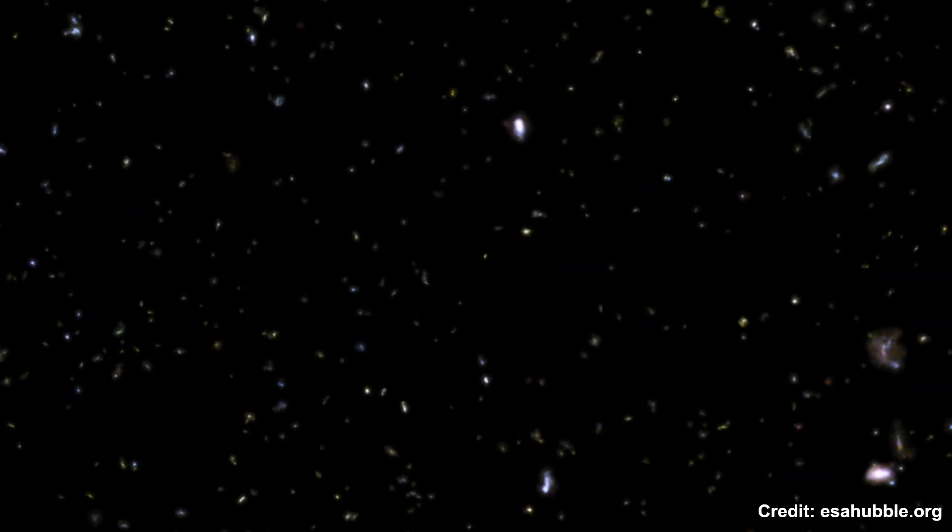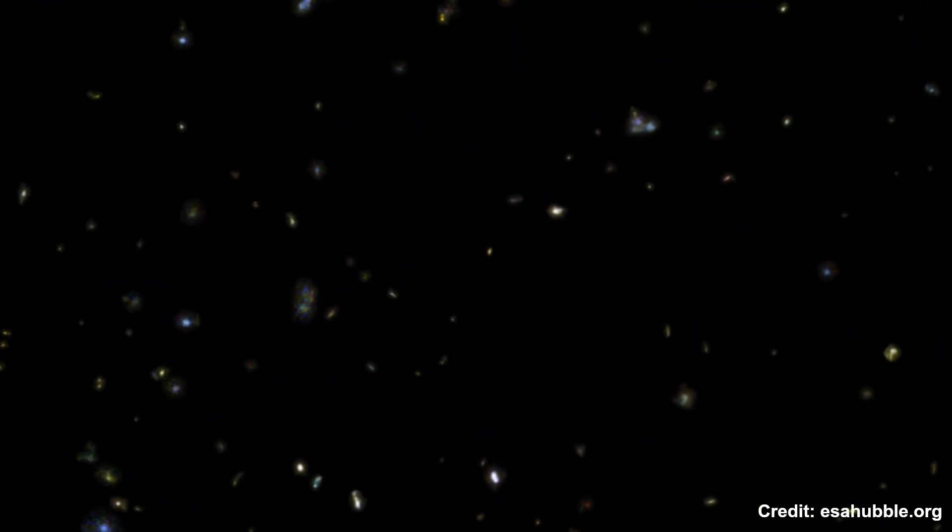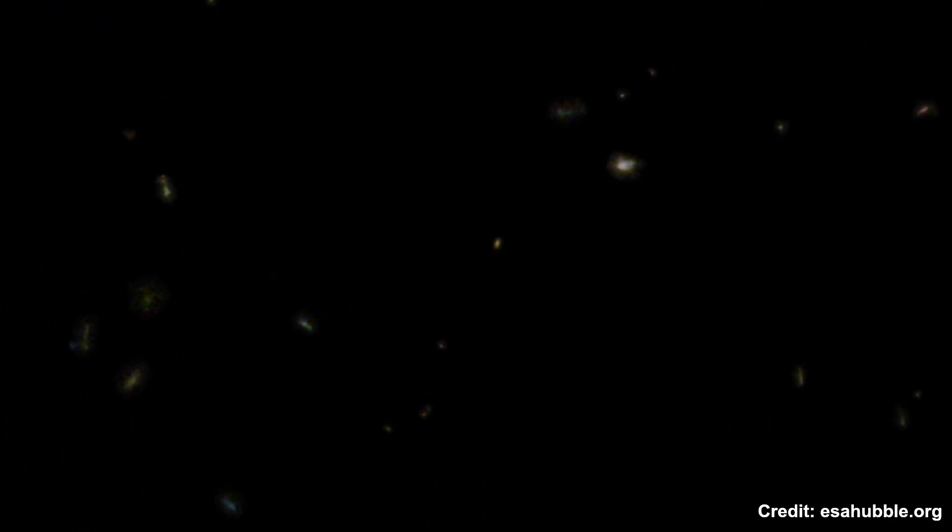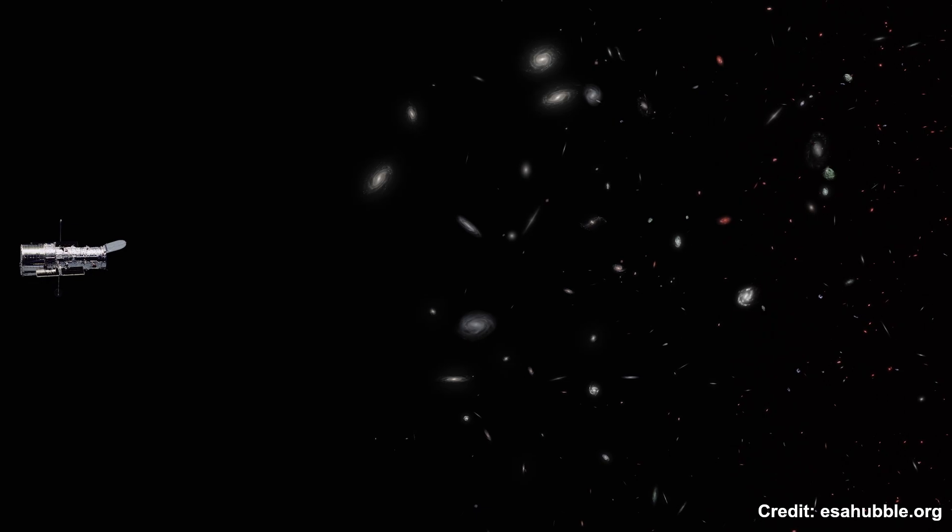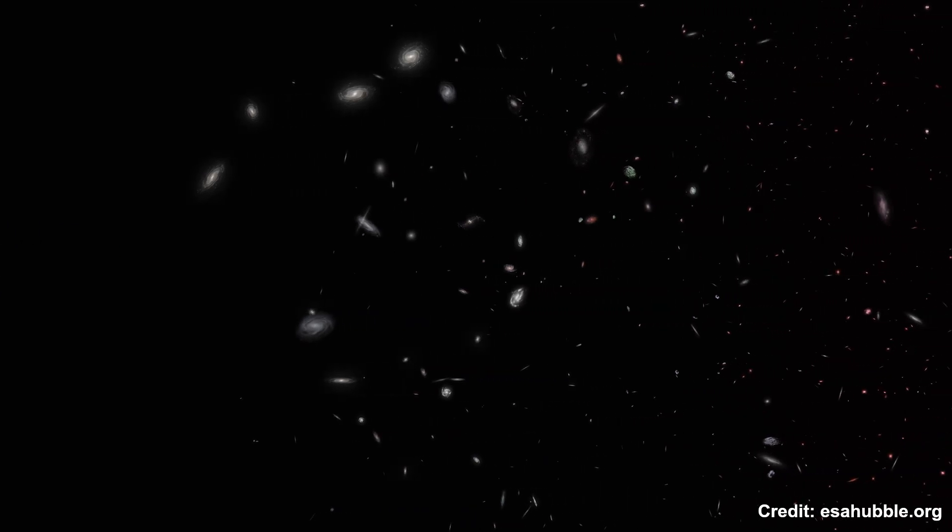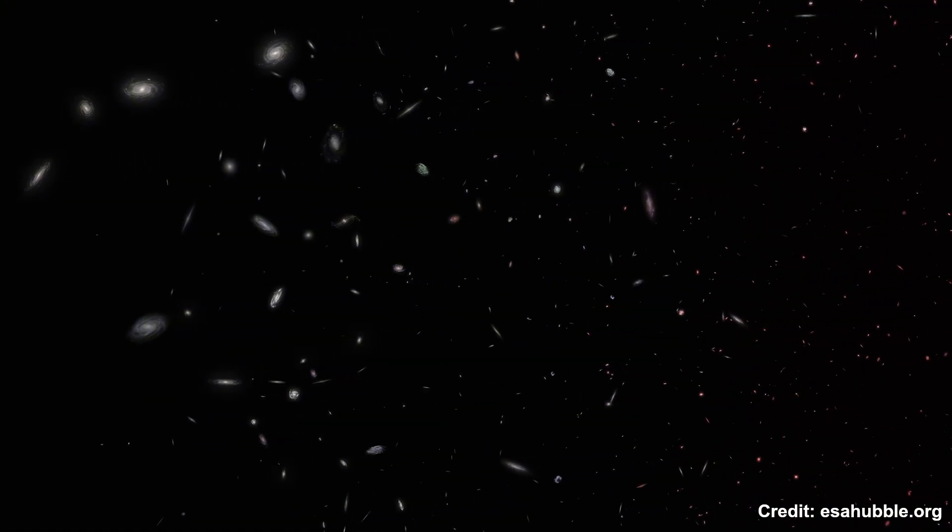So, what does 2 trillion galaxies really mean? Imagine each galaxy as a collection of stars like our Milky Way, each potentially containing billions of planets. The sheer scale of the universe is almost impossible to comprehend. We are but one planet, orbiting one star, in one galaxy, among trillions.